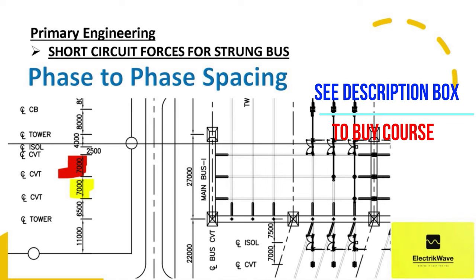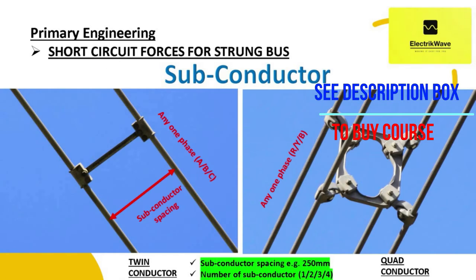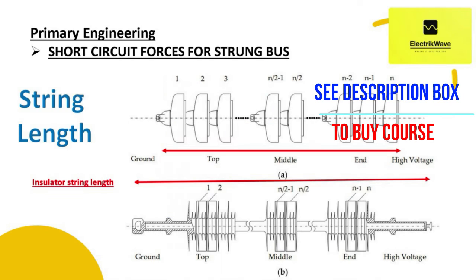Then we will discuss phase-to-phase spacing input — that is, the spacing between any two phases. Then we will understand sub-conductor input in terms of spacing and number of conductors, including twin conductor configuration and quad conductor configuration. Then we will see string length with length of hardware and accessories to calculate the actual length of conductor required to carry out the short circuit force for the strong bus.